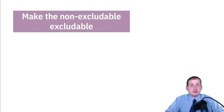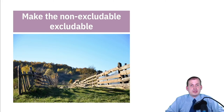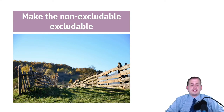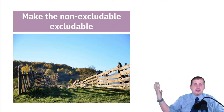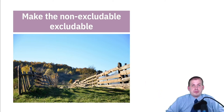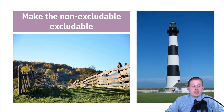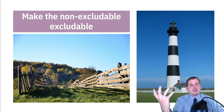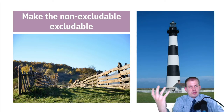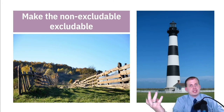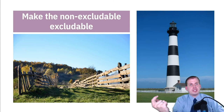One solution to common pool resource issues is to make the non-excludable excludable and block access to these things. If you have a commons, you can put a fence around it, charge people access to it, and now it is no longer a commons — it is excludable. Lighthouses are typically seen as a stereotypical public good because they're non-rivalrous: one person looking at a lighthouse does not prevent others from using it.